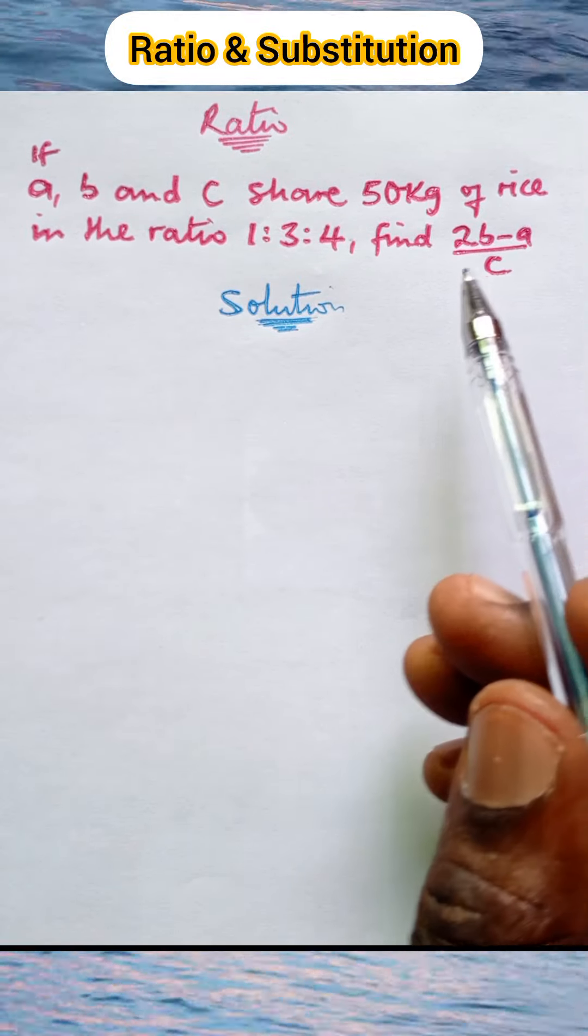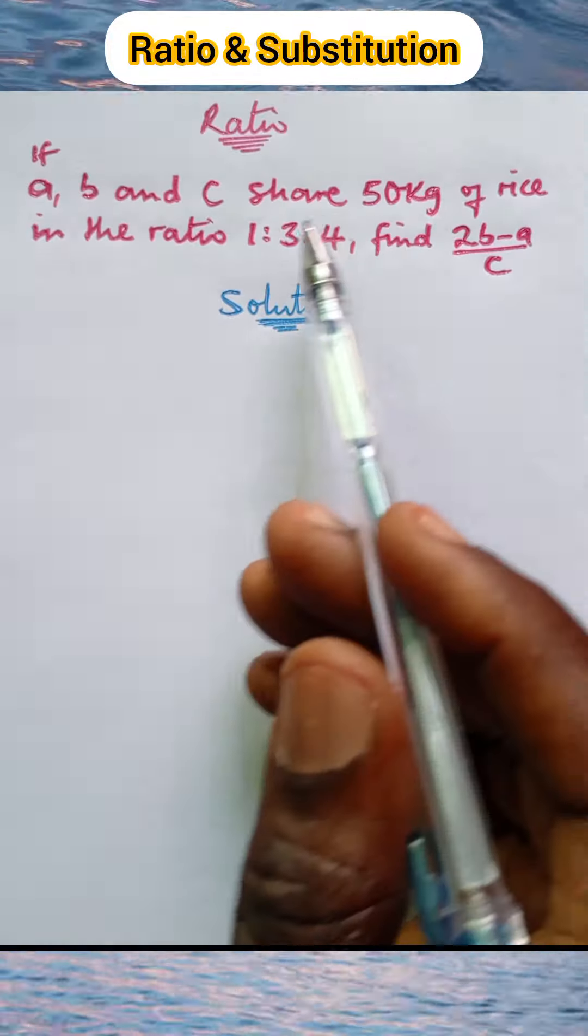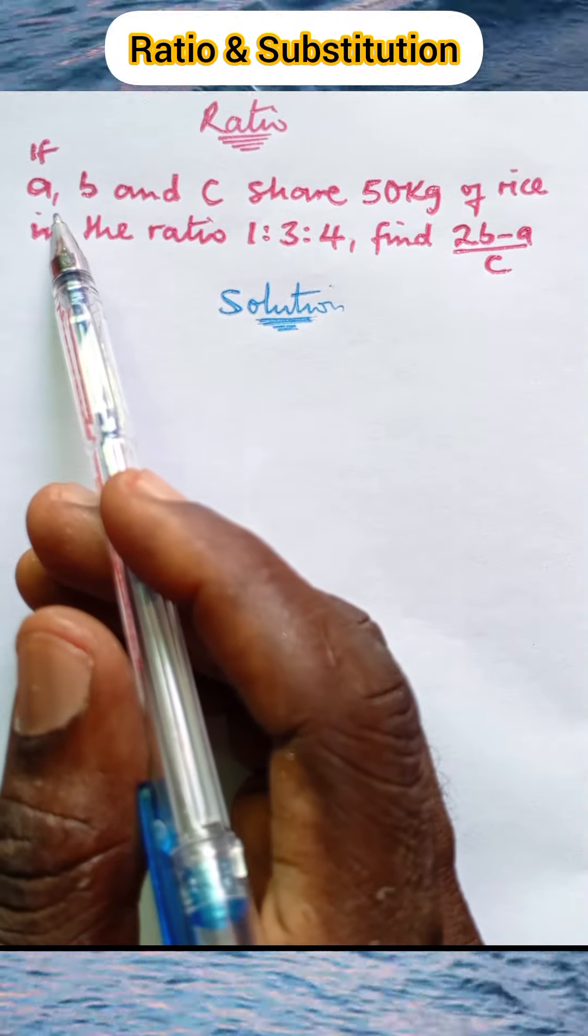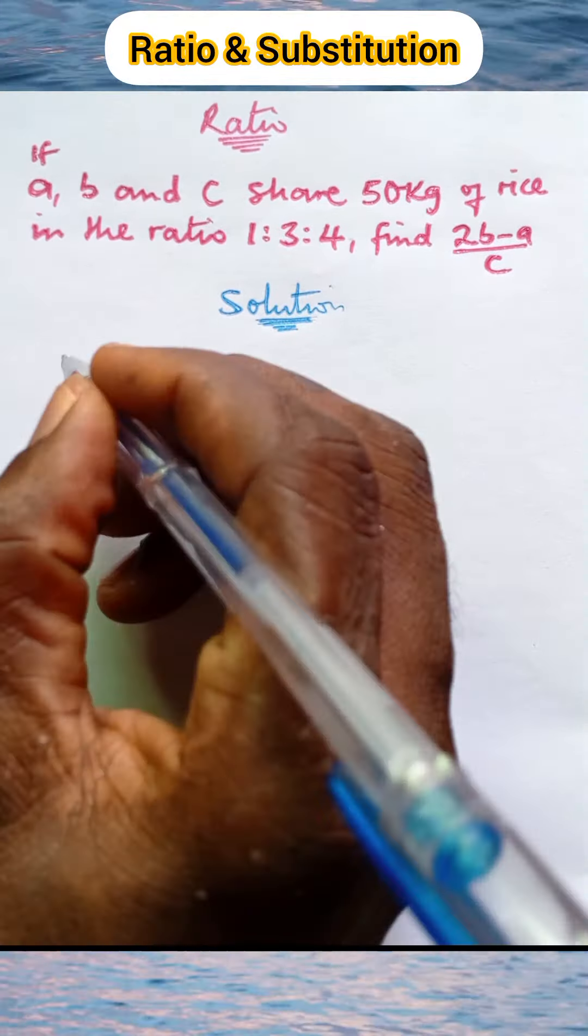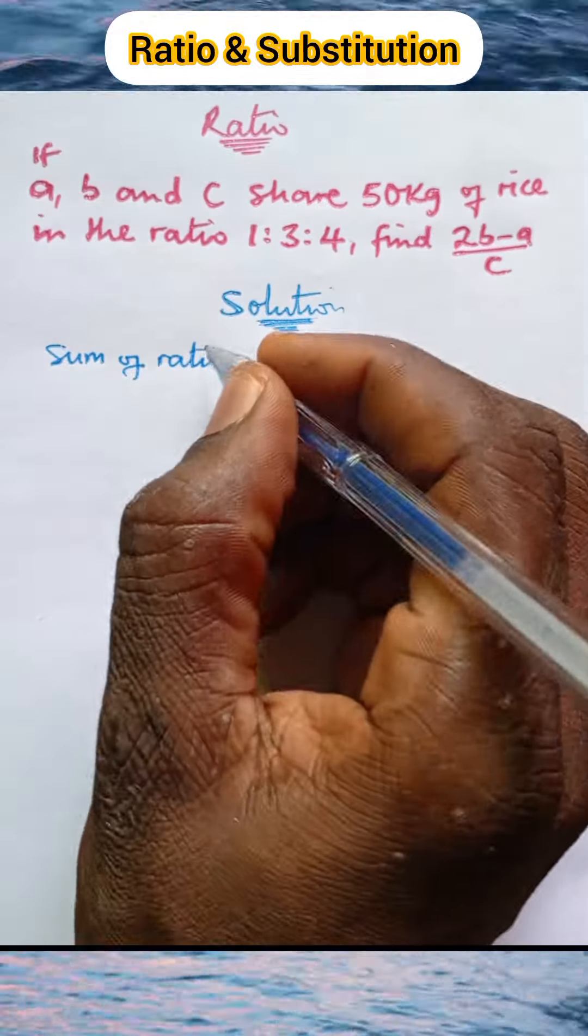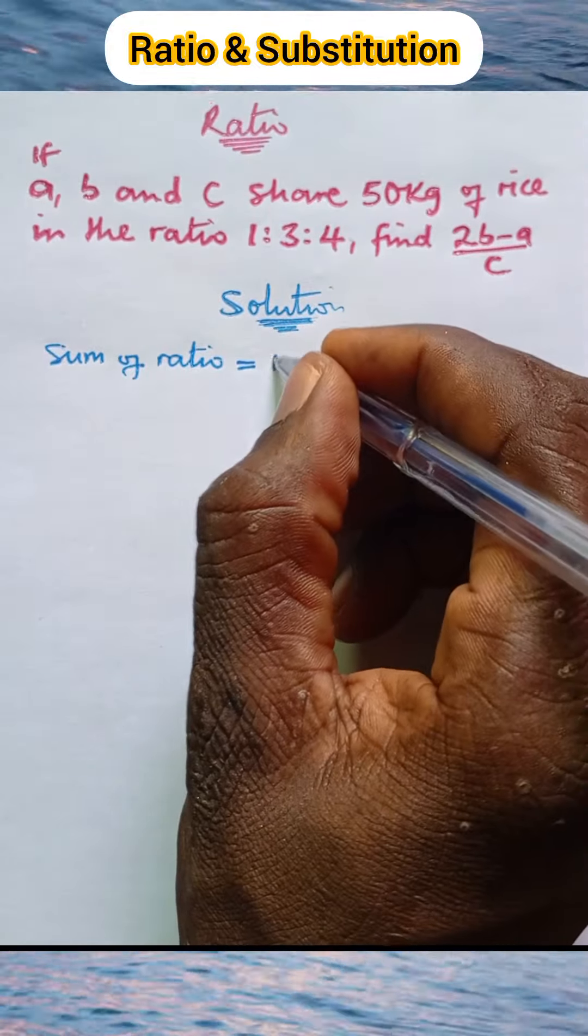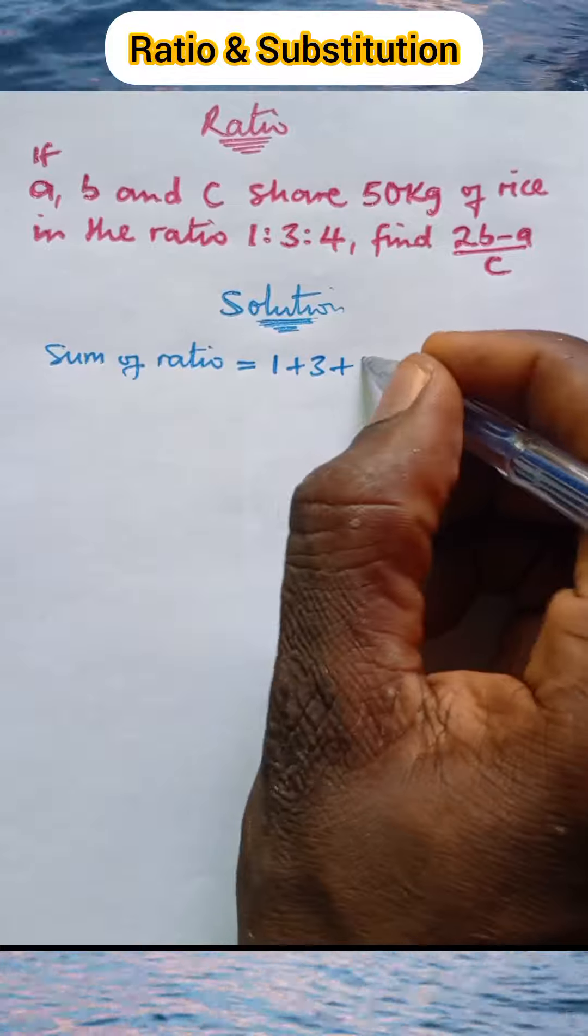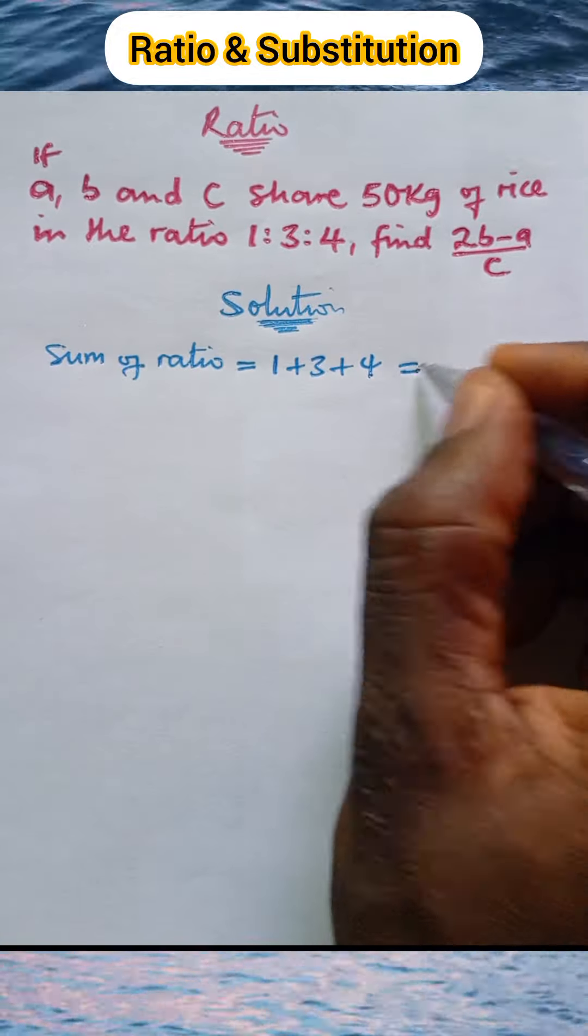The first thing is to calculate the quantity of rice each person gets. Let's start by adding up the sum of the ratio. Sum of ratio equals 1 + 3 + 4, which gives us 8. This is the sum of the ratio into which the rice is to be shared.